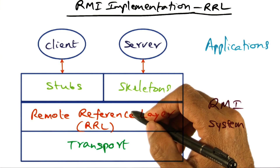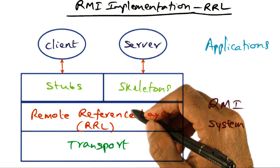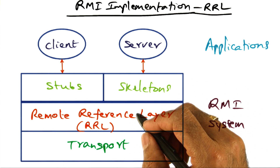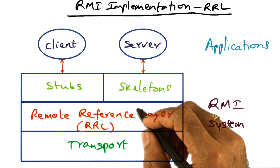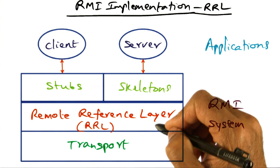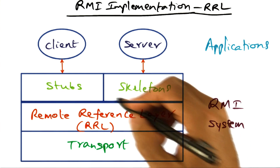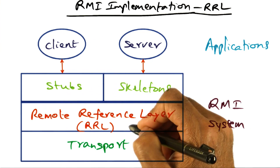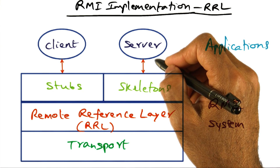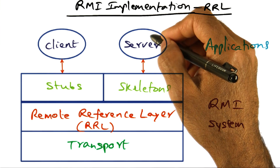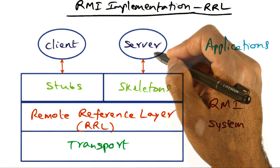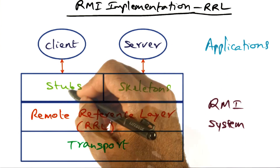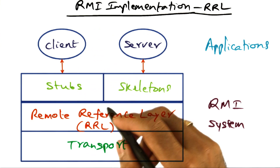Marshalling and unmarshalling are also called serializing and deserializing Java objects, and all of that is being done by the RRL layer. The objects being passed as arguments are serialized by the RRL and deserialized on the server end and given to the server. Similarly, the result, which is also an object, is serialized using the remote reference layer, and when it arrives on the client side, it is deserialized and delivered as a result object back up to the client.